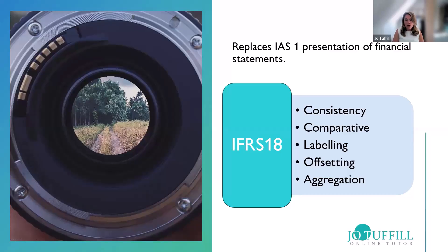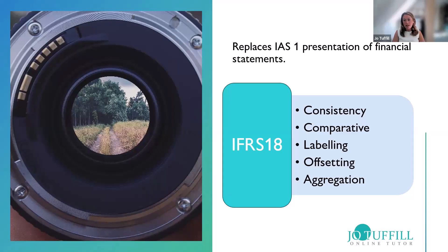There are offsetting rules: you should only offset things that are required by a standard. For instance, financial instruments can be offset if they have the same characteristics and are part of the same contract. You can offset items in the cash flow statement — cash and cash equivalents can be offset against an overdraft. Deferred tax assets and deferred tax liabilities can sometimes be offset. Offsetting is not allowed unless required by another standard.